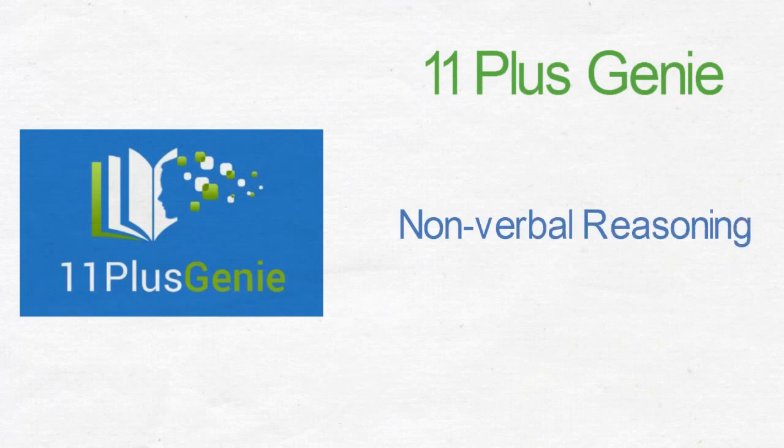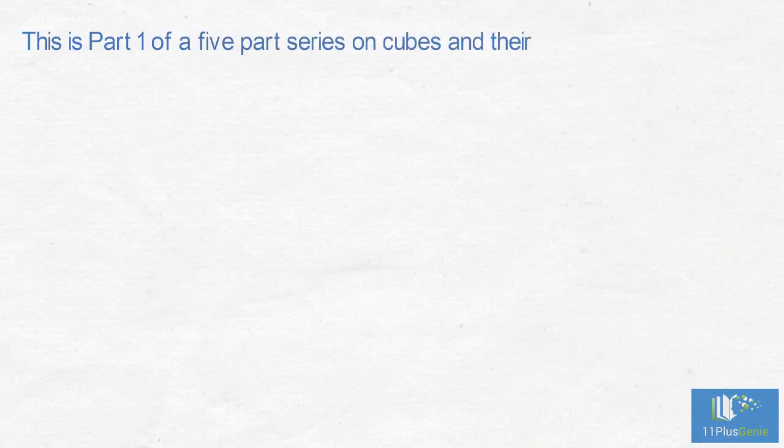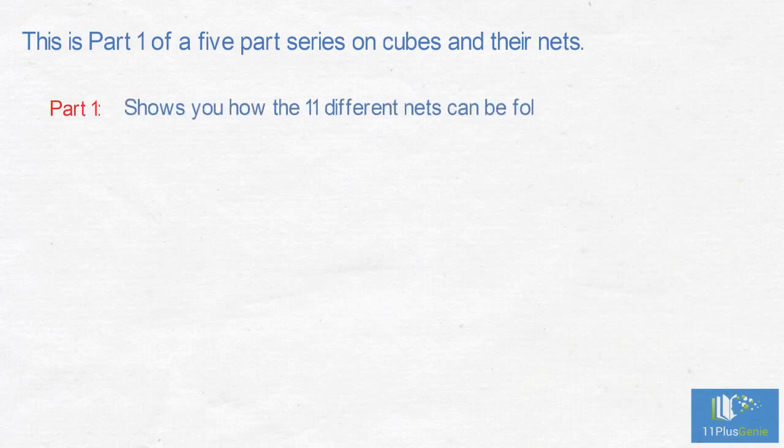Nonverbal reasoning type 15 part 1: folding nets to form cubes. This is part 1 of a five-part series on cubes and their nets. Part 1 shows you how the 11 different nets can be folded to form cubes.